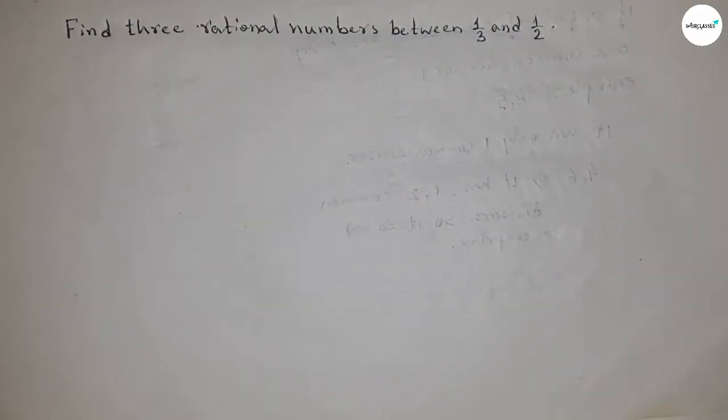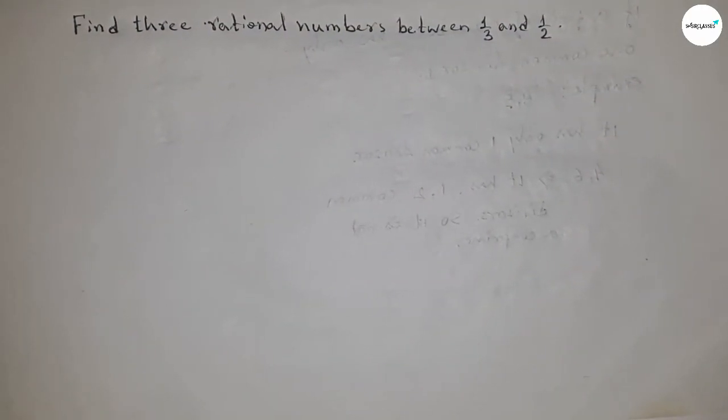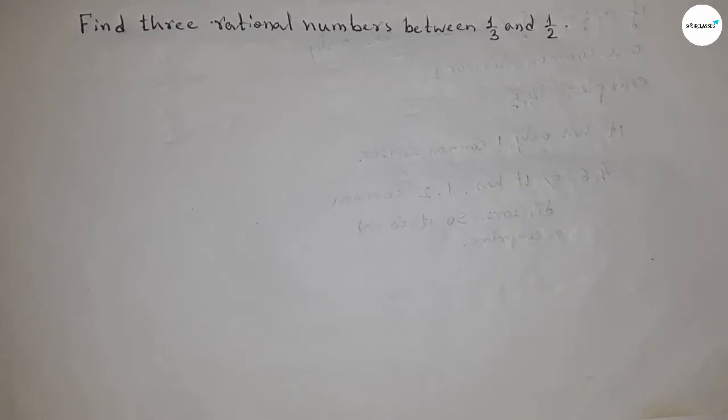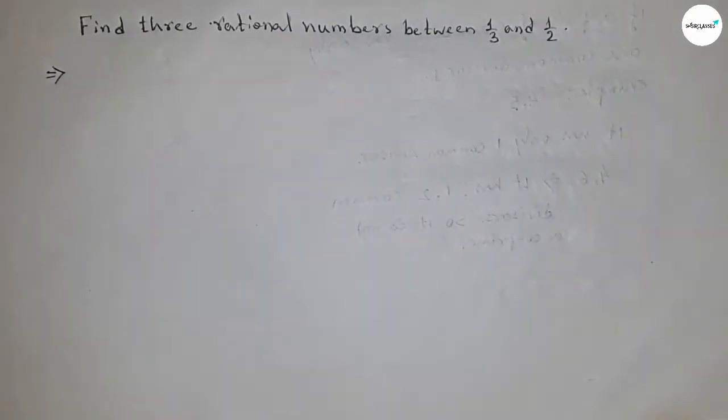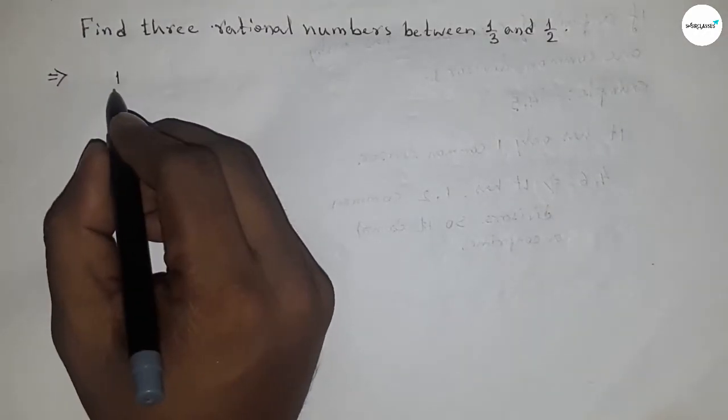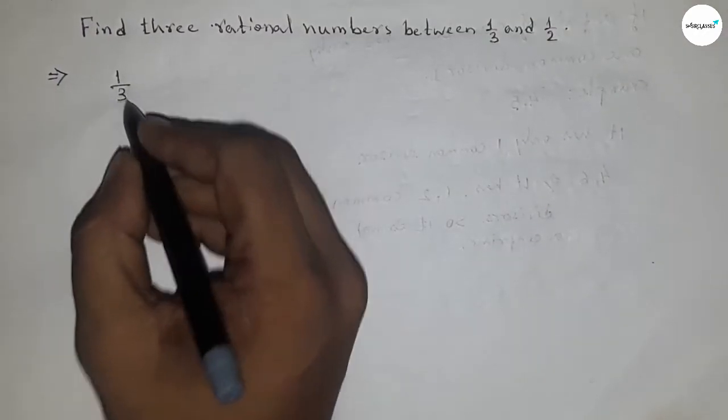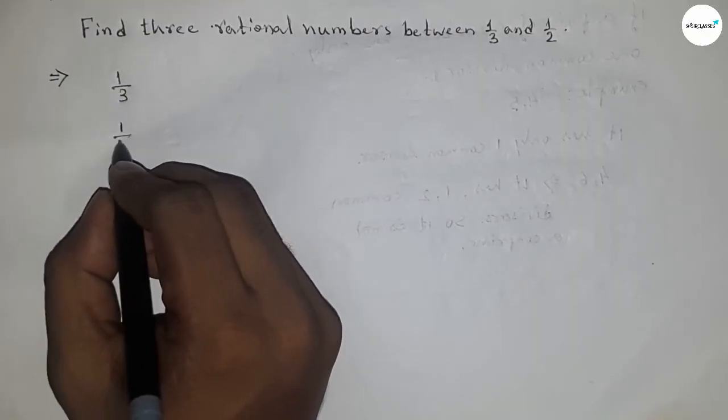Hi everyone, welcome to SSR classes. Today we have to find three rational numbers between one upon three and one upon two. In this video, how to find three rational numbers between one upon three and one upon two. Let's start. First of all, write down here the given rational numbers: one upon three and one upon two.